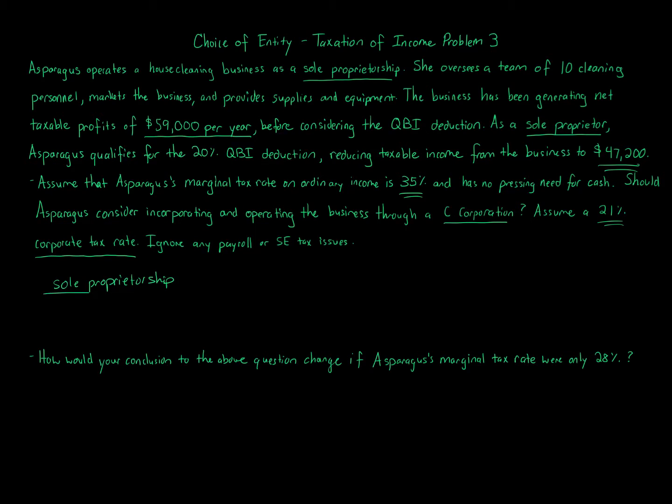If we continue to be a sole proprietorship, which by the way if you're a single member LLC the tax consequences would be the same but you have the benefit of being an LLC from a liability standpoint, you take $47,200, which is the after QBI effect of the income, times her marginal ordinary tax rate of 35%, and that gives us $16,520 of income tax owed each year.